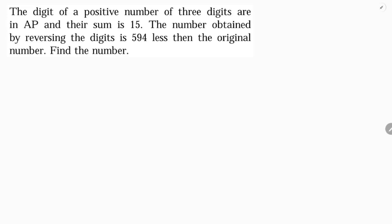The digits of a positive three-digit number are in AP and their sum is 15. The number obtained by reversing the digits is 594 less than the original number. Find the number.